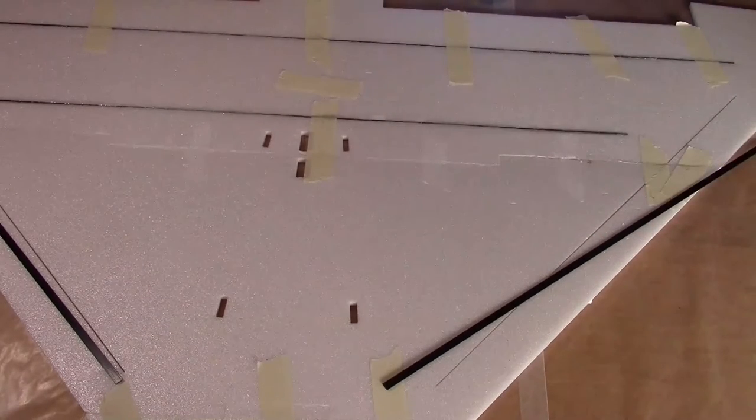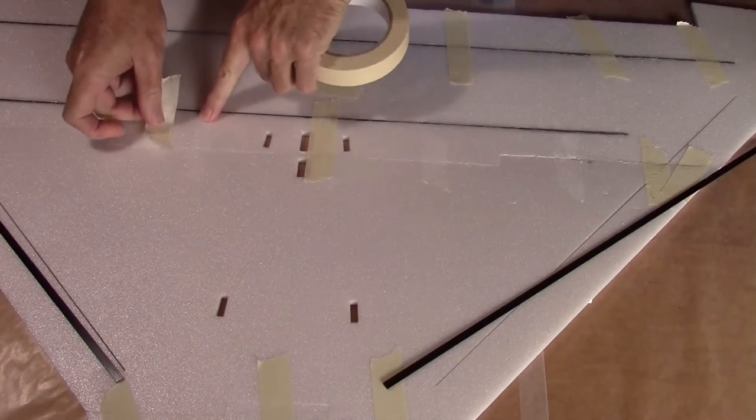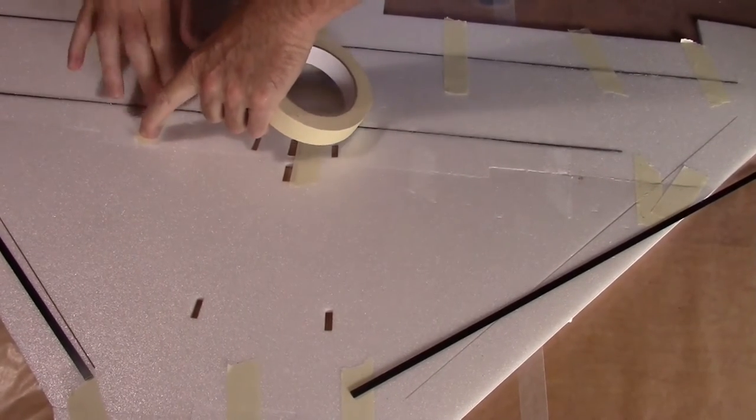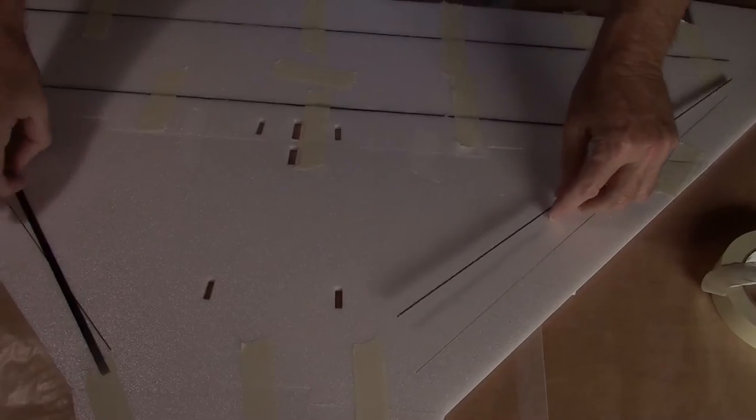And I'm just going to wipe it down a little bit before I put the tape on it. And we'll just go ahead, like before, and we'll put tape all along here to pull the two parts together. Let's do the side spars. I'm going to glue them up.